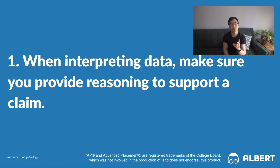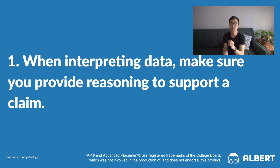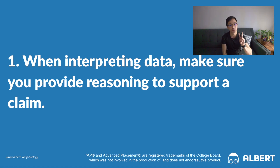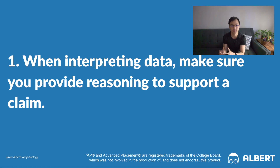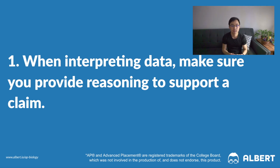The first tip is to remember that when you're interpreting data, you need to make sure that you provide reasoning to support your claim. In recent years, students have really struggled here in terms of understanding the two-part nature of directive words like explaining or justifying something. You get two points — one for the actual identification and the second for explaining specifically why. So make sure that you have both parts of that.